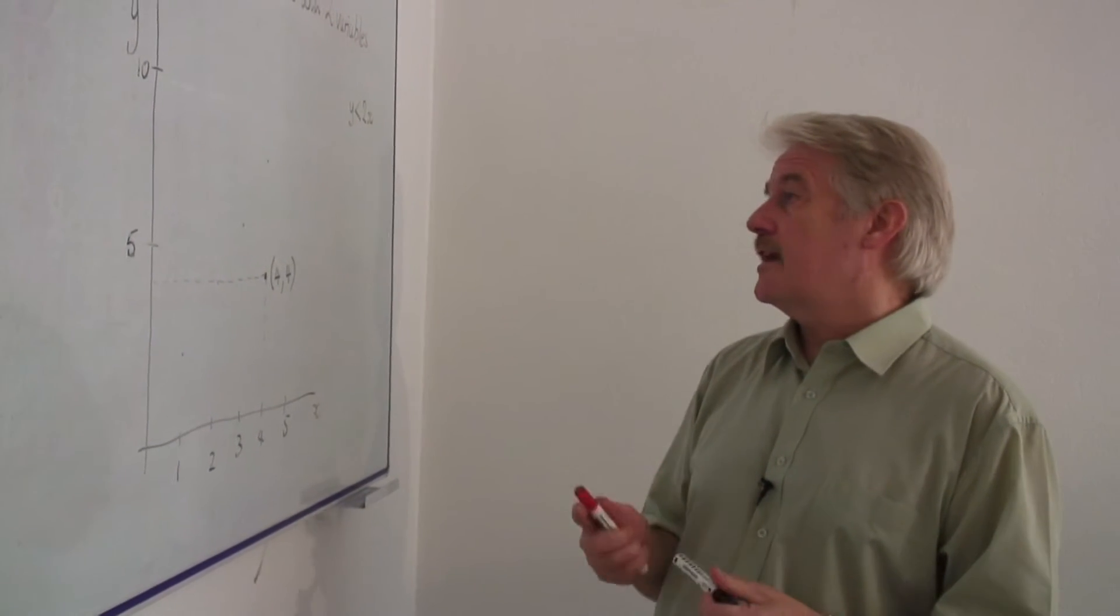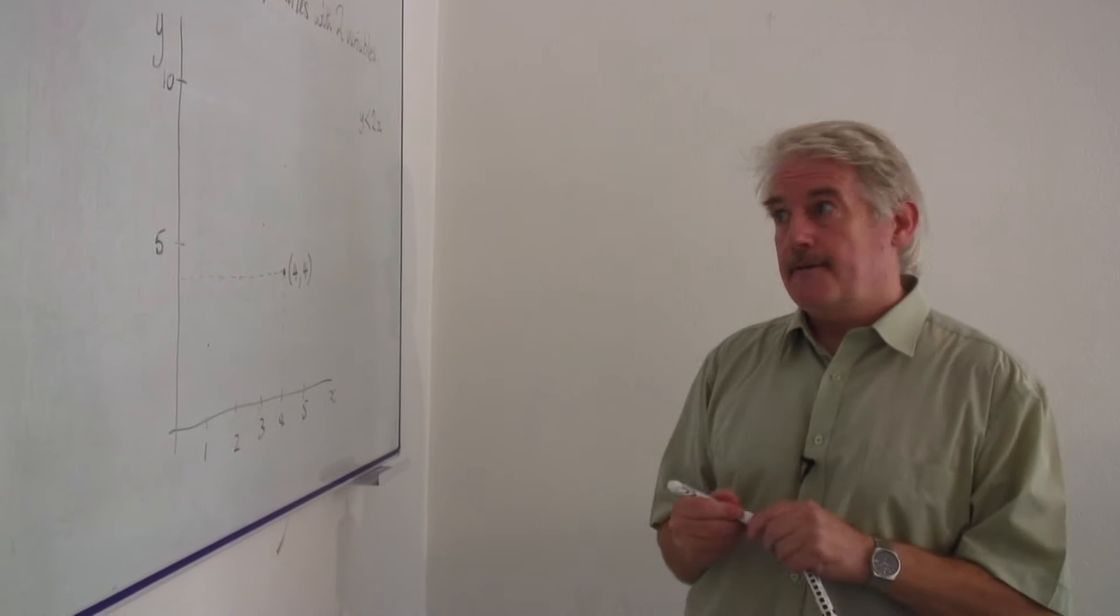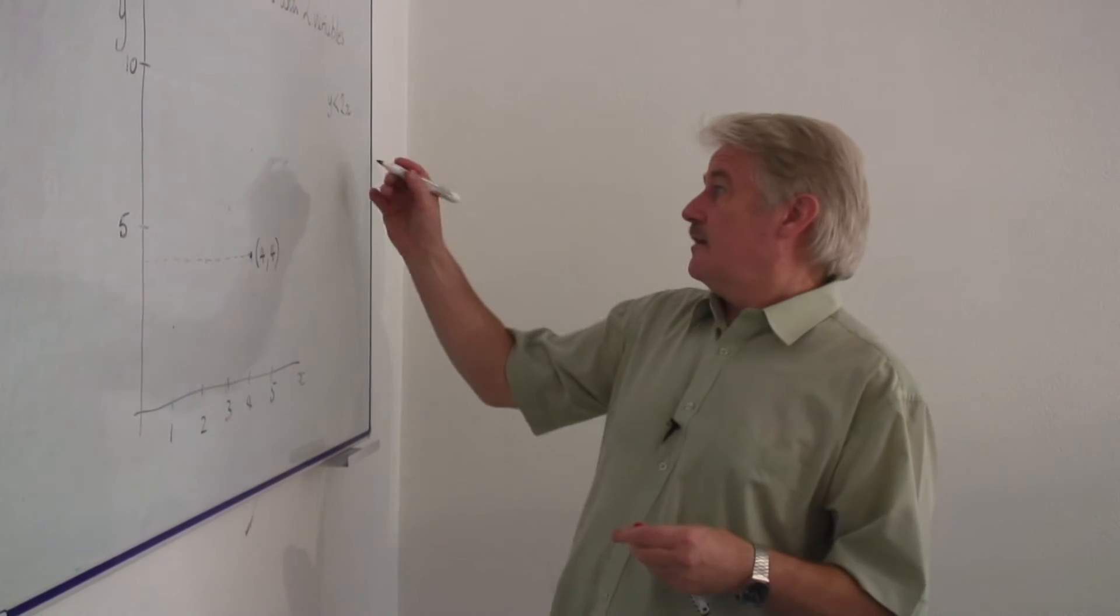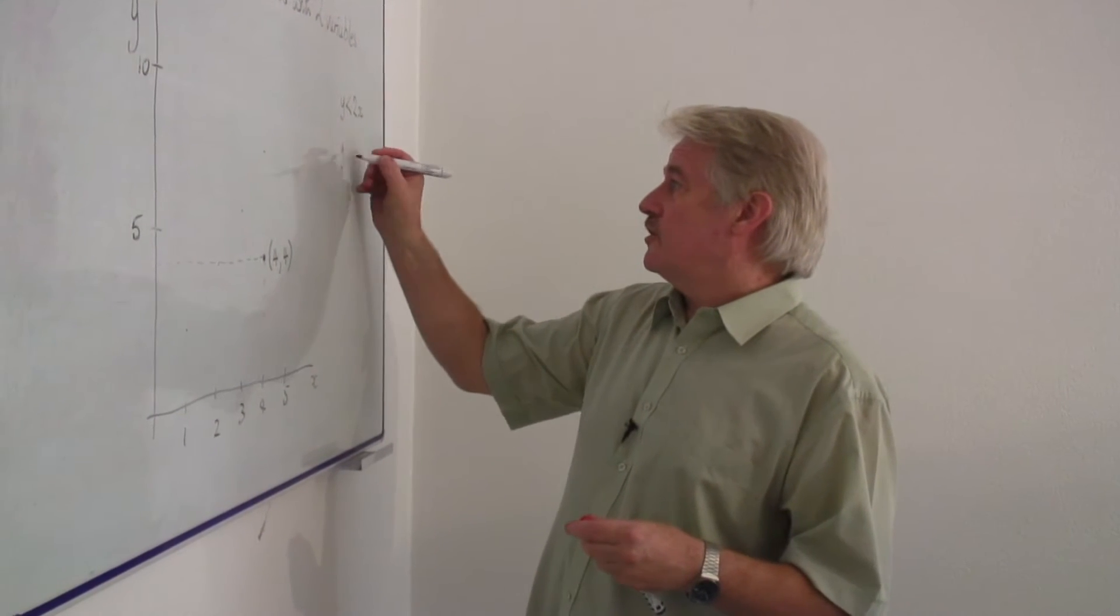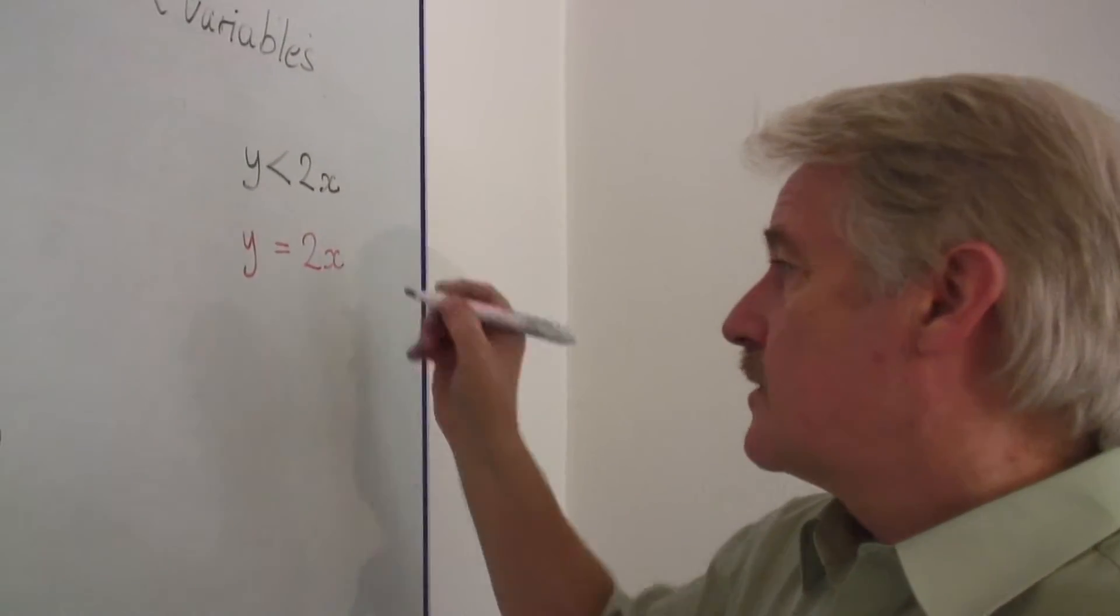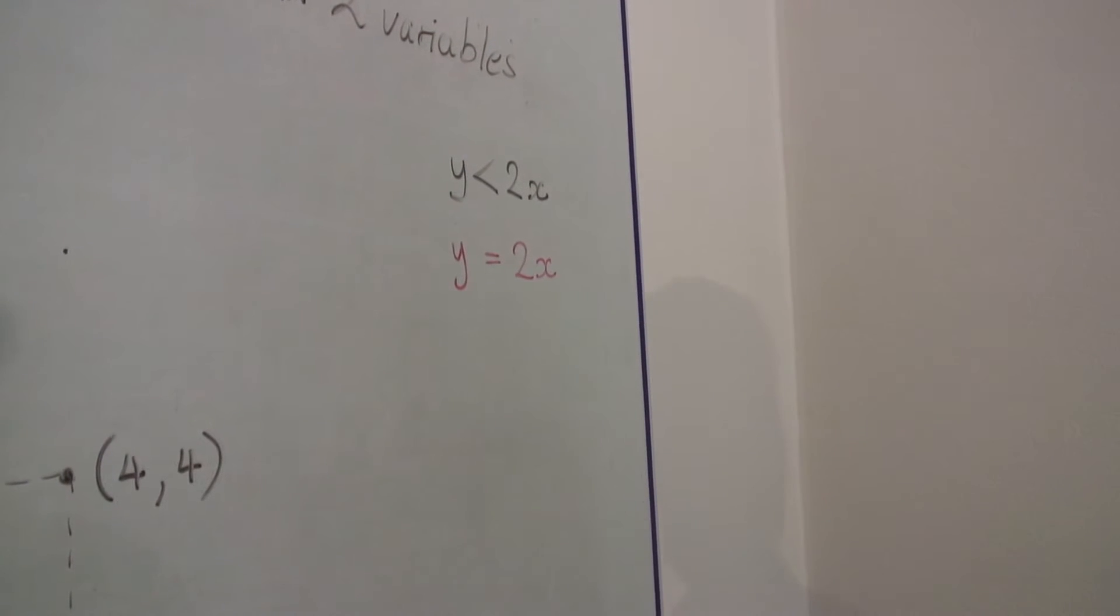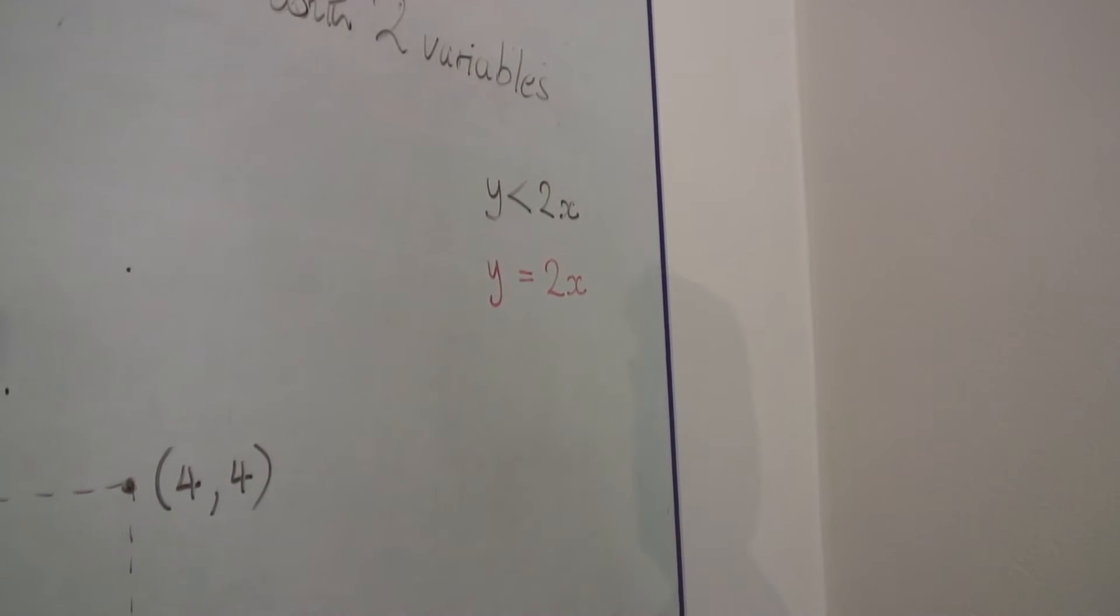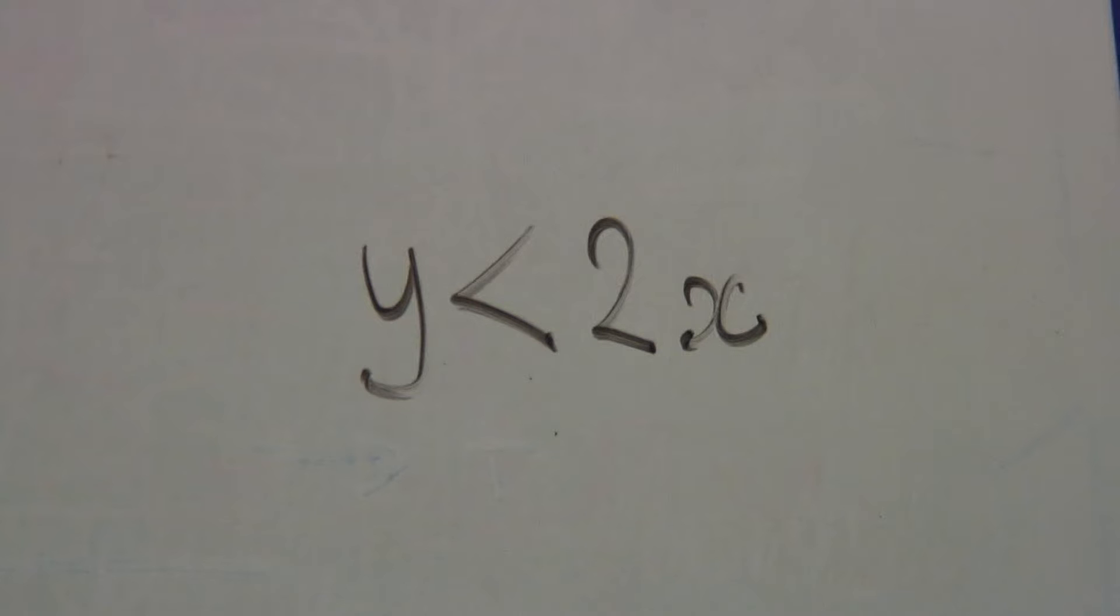Well, the first thing we have to say is there is a boundary, and the boundary condition is y equals two x. So if we know where y equals two x is, we should be able to find out where y is less than two x.